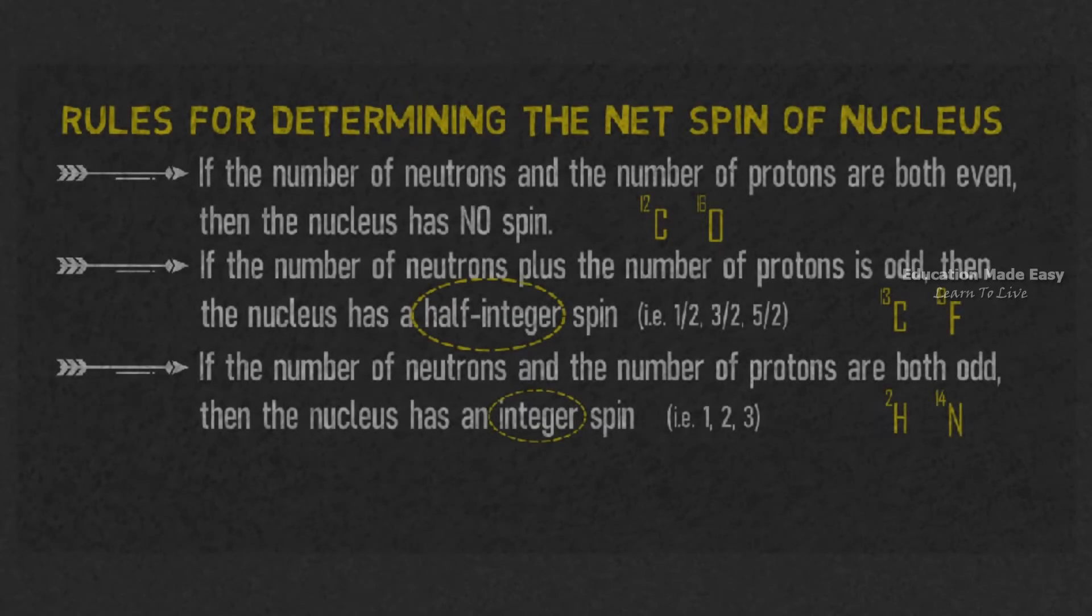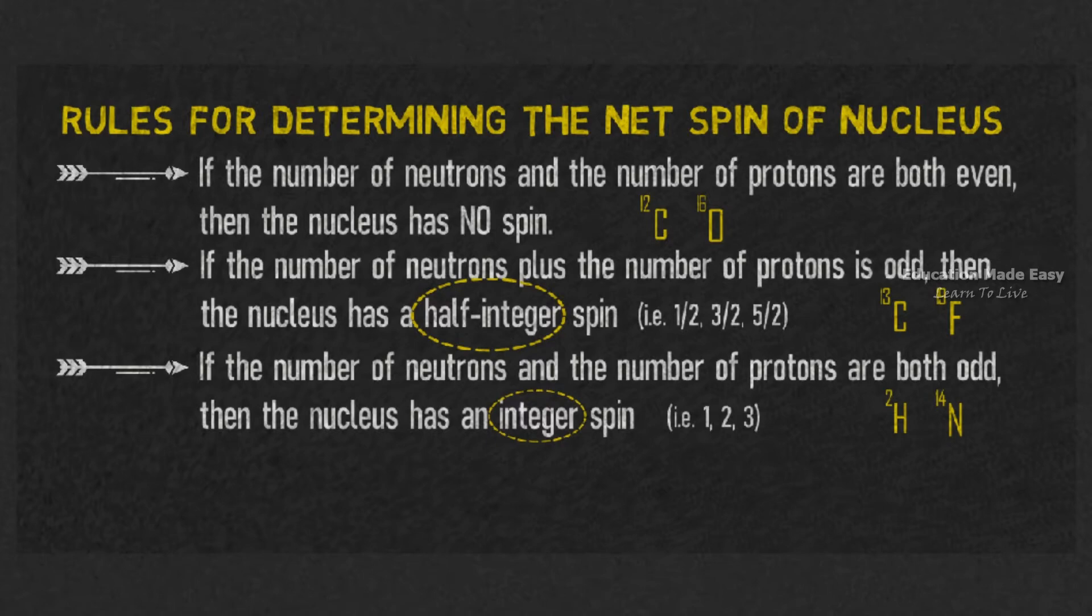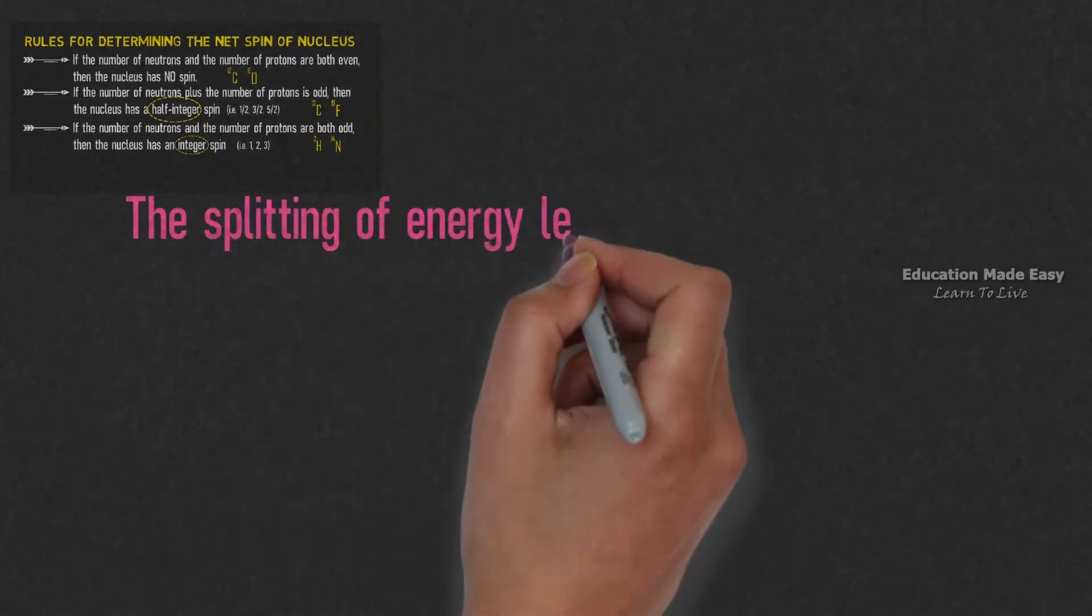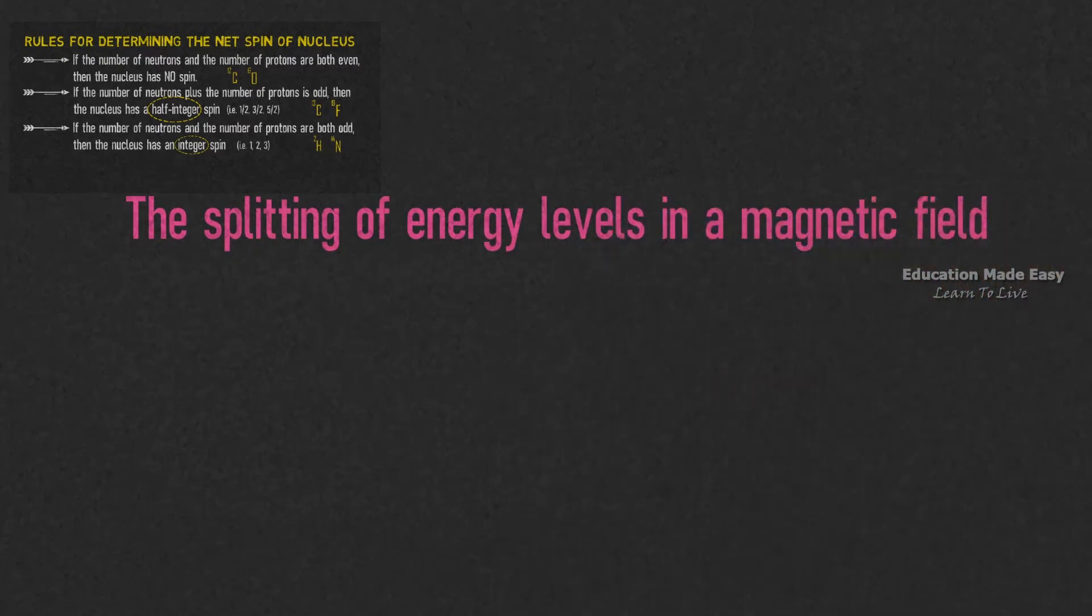We have already learned the rules for determining the net spin of a nucleus in the previous video. Here, let us learn about the splitting of energy levels in a magnetic field.